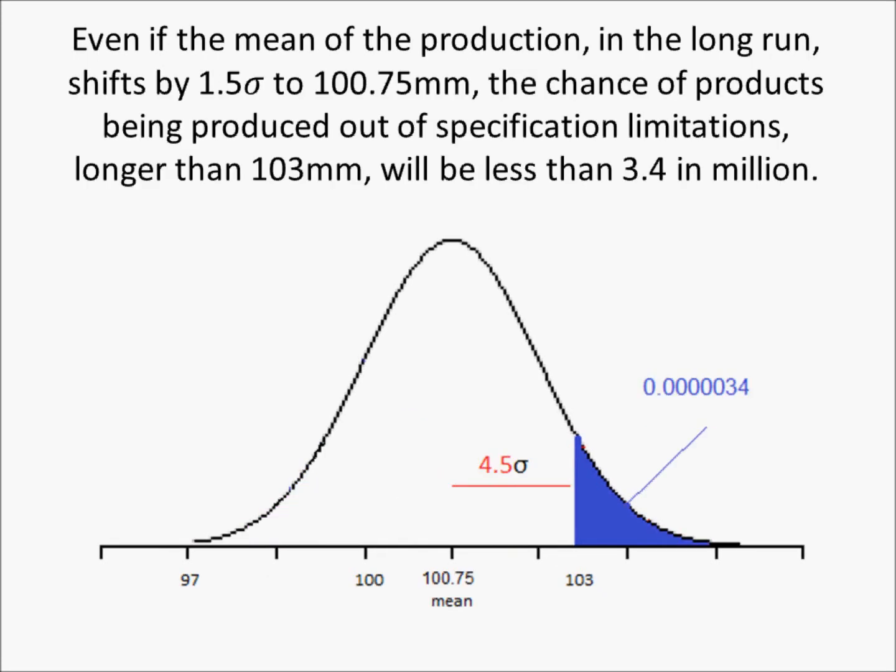Even if the mean of the production in the long run shifts by 1.5 standard deviations to 100.75 millimeters, the chance of products being produced outside the specification limits — longer than 103 millimeters — will be less than 3.4 per million.